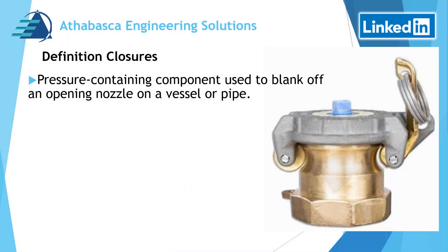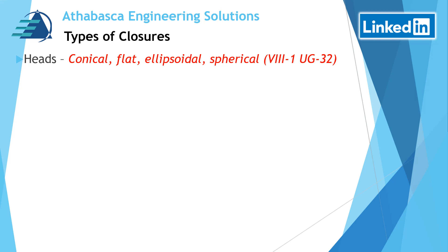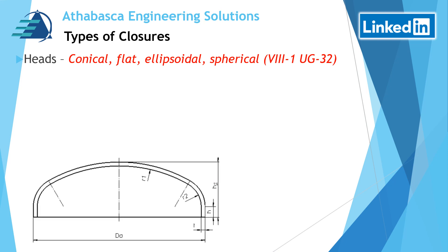The definition of a closure by ASME is a pressure containing component used to blank off an opening nozzle on a vessel or pipe. Closures are grouped into categories. The first group is called heads — conical, flat, ellipsoidal, and spherical heads are common examples, as shown in the diagram below, referencing Section Eight, Division One, UG32.